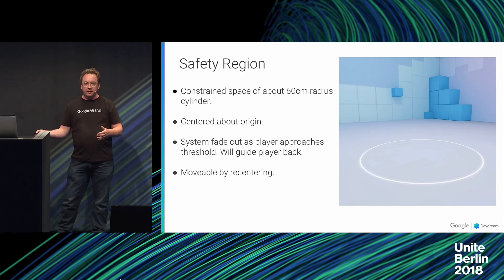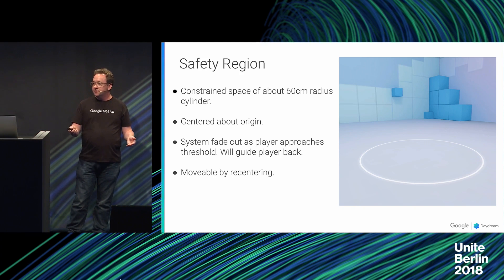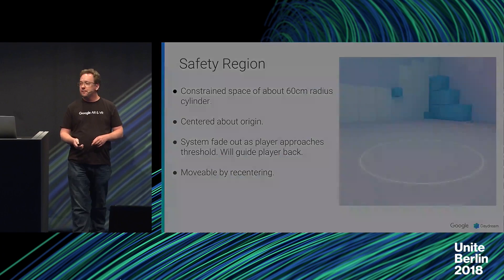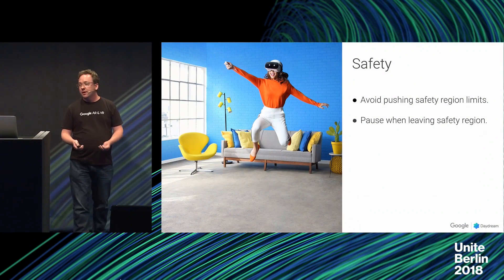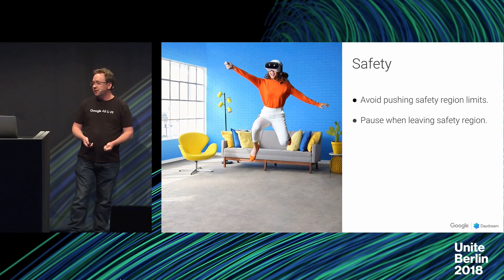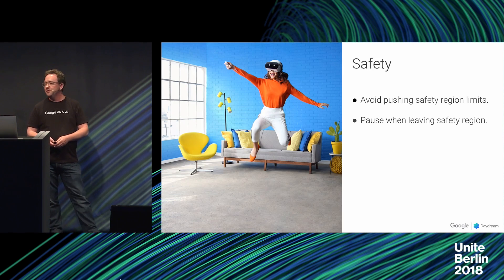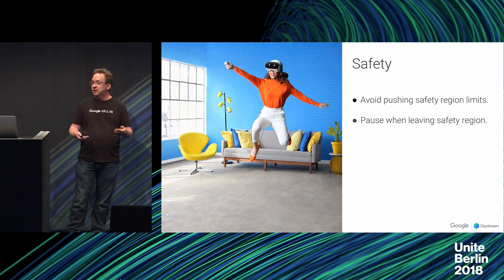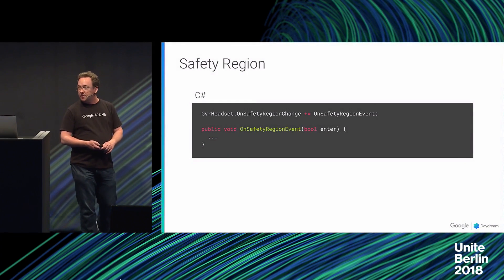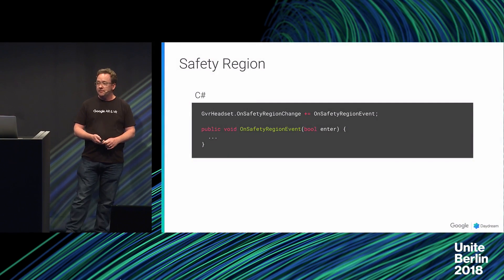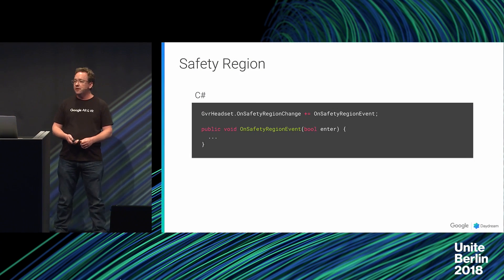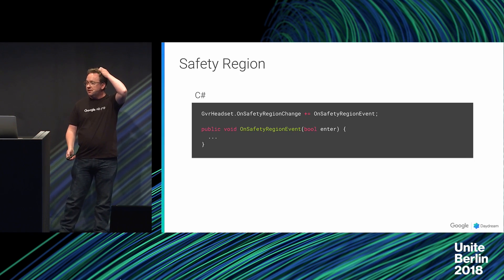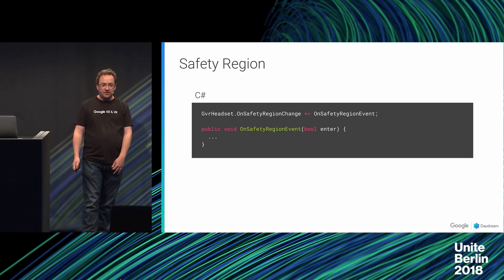A user can reset the center of the safety region using the recentering gesture on the Daydream controller. We recommend avoiding pushing the safety region limits as it is not a particularly good user experience. If your game has any critical action, you should pause whenever the user leaves the safety region. The GVR headset API provides an event you can register for to be notified when the user exits or enters the safety region, allowing you to pause critical game action as needed.